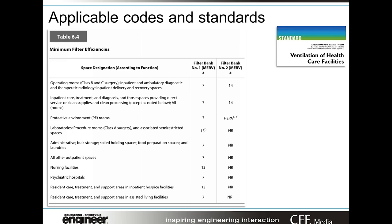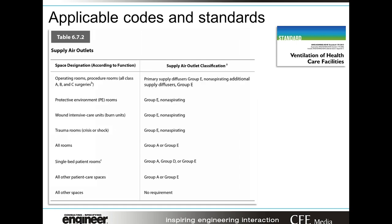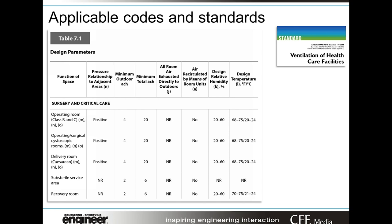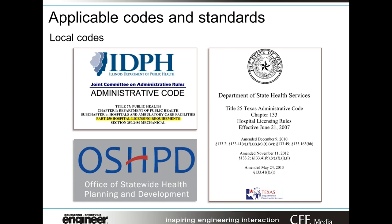ASHRAE Standard 170 provides simple tables that define various spaces within the facility and expectations for filter requirements, outlet and inlet positions, and air change rates, both from direct outdoor air and within the space. Some states such as Illinois, California, and Texas have not adopted FGI as a guideline and have published their own articles, guidelines, standards, and codes for ventilation in healthcare facilities. Many are adaptations of FGI and ASHRAE 170, but the bottom line is it's very important to understand where the facility is located and what standards and codes are applicable.